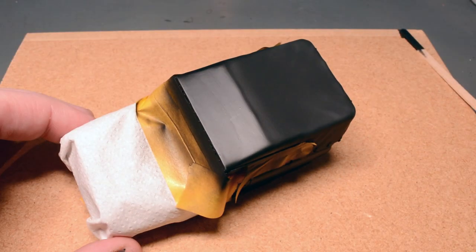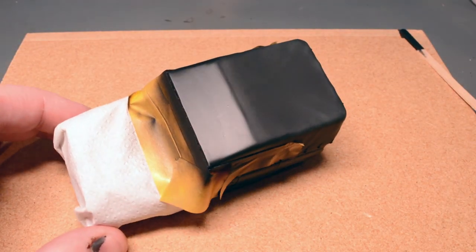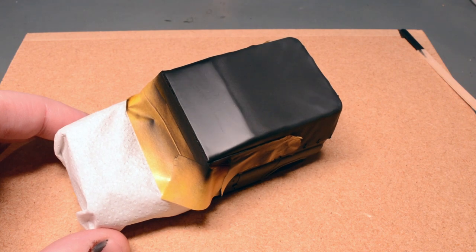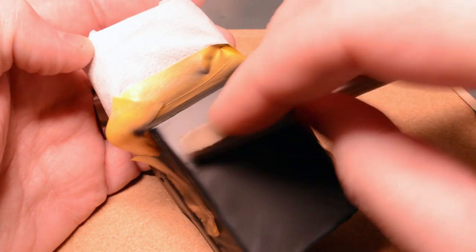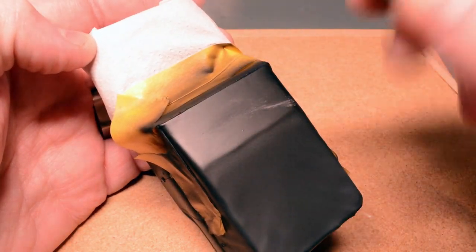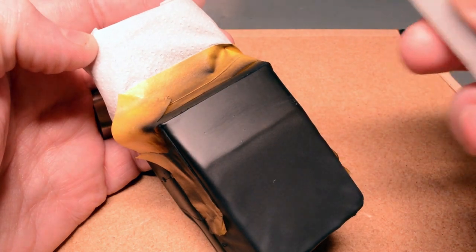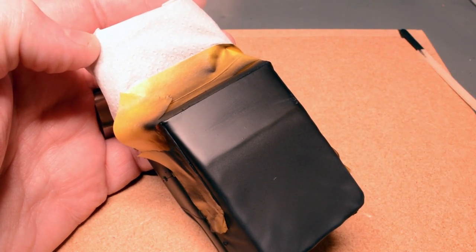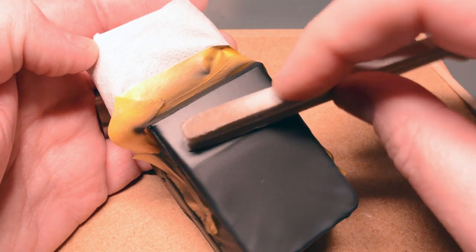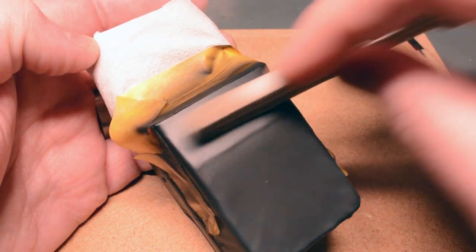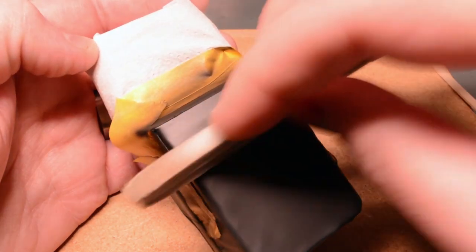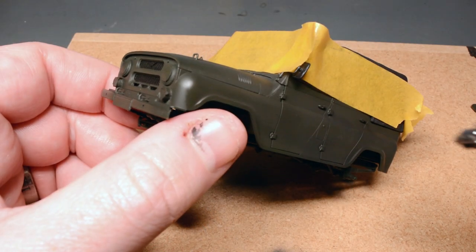Initially it looked like there was a bit of a step in there however this turned out to be just primer build up and a quick run over with a UMP sanding sponge got everything nice and smooth. I actually ended up being really glad that I'd took the time to do this even though it was an unwanted step as the roof now looked way more like a canvas stretched over the car body than the original kit parts would have done.